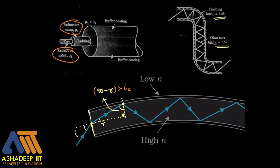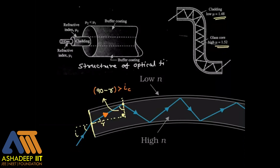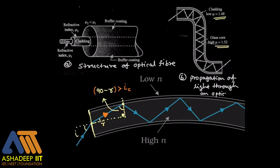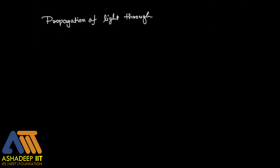This is how we set the values of mu1 and mu2. This is the structure of the optical fiber, and this describes the propagation of light through an optical fiber, as shown in the figure.